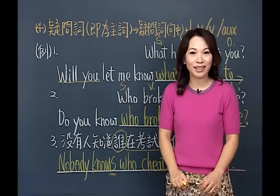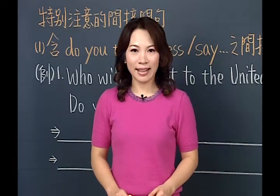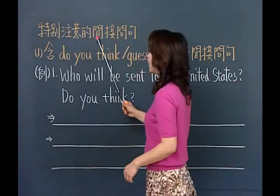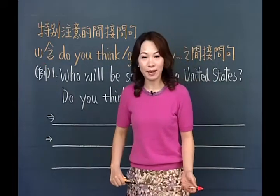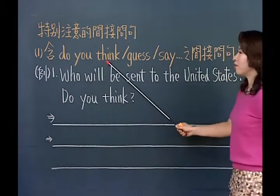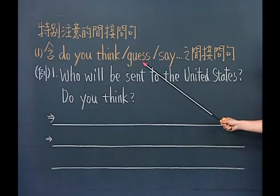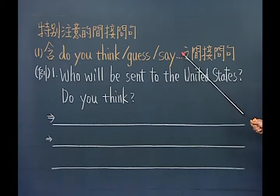好，在这个阶段里面我们讲到了所谓的怎么样把直接问句改成间接问句的方法，甚至开始让你做整句翻译。间接问句四个形成方式已经讲完了。接下来我们来看看特别注意的间接问句的用法，首先第一点：如果这样的间接问句含有Do you think、Do you guess、Do you say、或Do you imagine这样的语气在里面的时候，要特别注意。